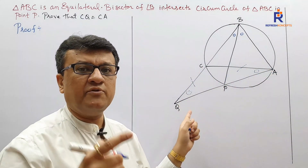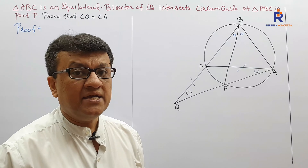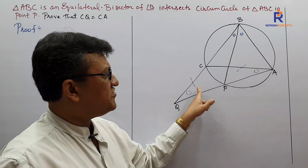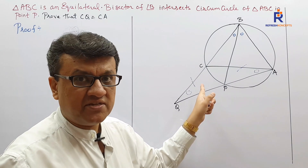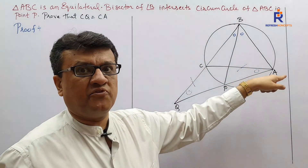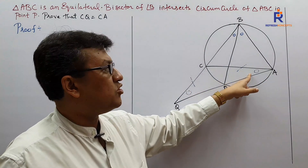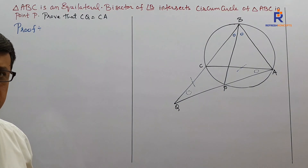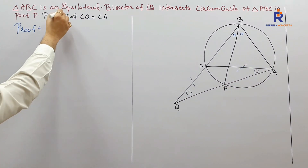In triangle CQA, if I want CQ to equal CA, I should prove the base angles equal — angle CQA congruent to angle CAQ. By the converse of the isosceles triangle theorem, my sum is done. So henceforth, proving those two angles congruent is my real target.